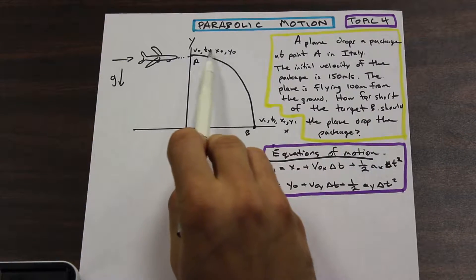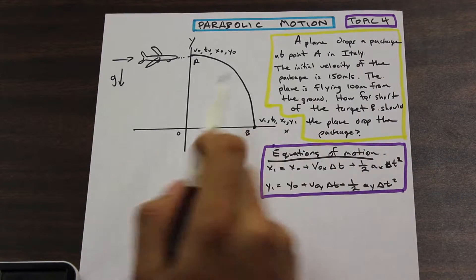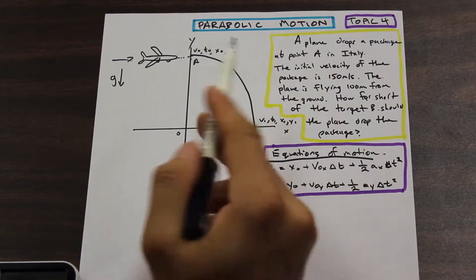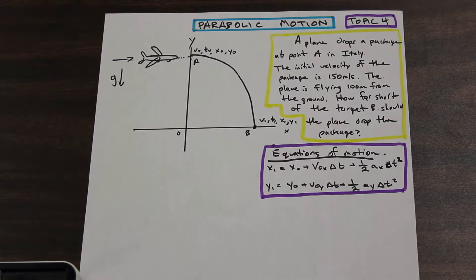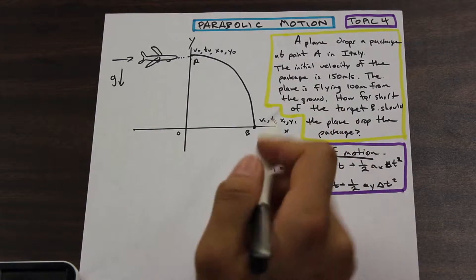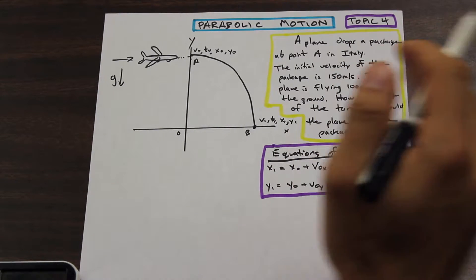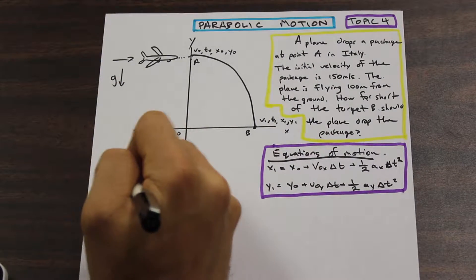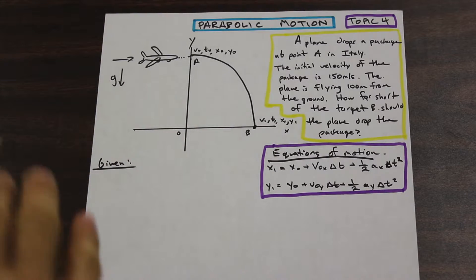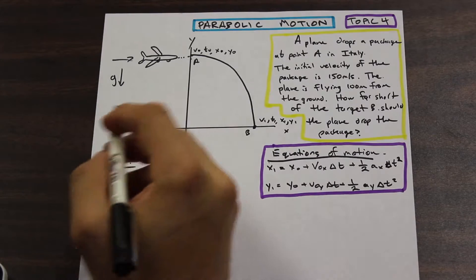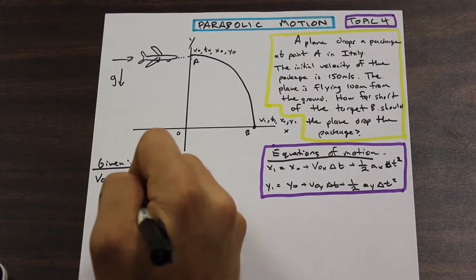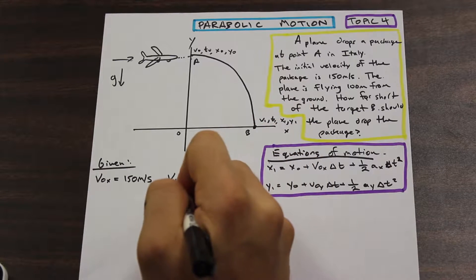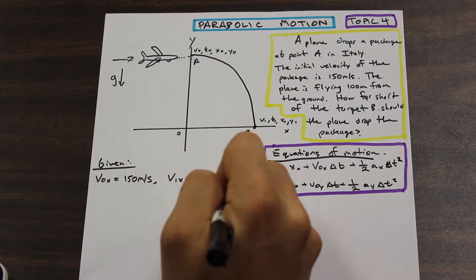The key thing is that the velocity in the x direction in parabolic motion is always constant. So if the plane is traveling horizontally at 150 meters per second and drops the package, the package will also be traveling at 150 meters per second. At the end of the parabolic motion, the x velocity will also remain 150 meters per second.